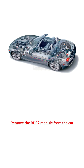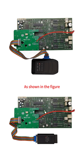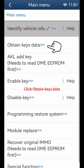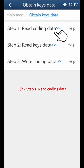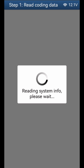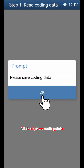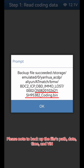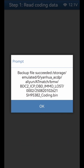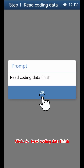Remove the BDC-2 module from the car. As shown in the figure, connect the ACDP, BDC-2 interface board, and BDC-2 module together properly. Click Obtain Keys Data, then click Step 1: Read Coding Data. Save Coding Data and click Continue. Click Continue, then click OK. Please note to back up the file's path, date, time, and VIN. The file name should end with Coding.bin. Click OK. Read Coding Data finish.